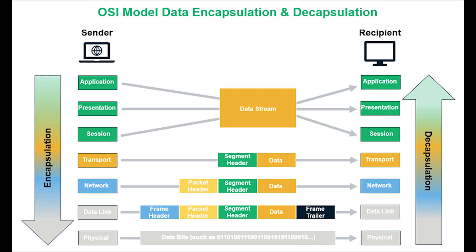At the transport layer, a segment header is added or removed. It is then sent to the network layer, where a packet header is added or removed, and then on to the data link layer, where a frame header is added or removed. Other layers aren't shown because they don't encapsulate or decapsulate.